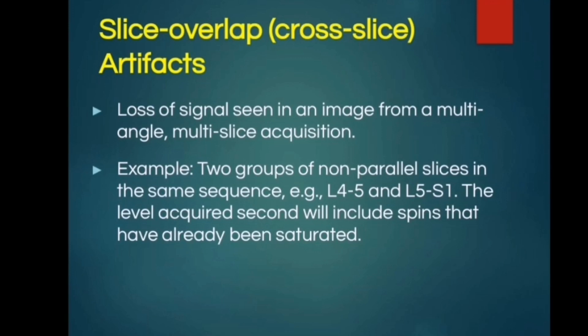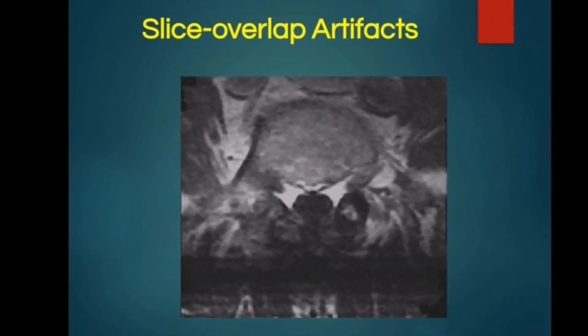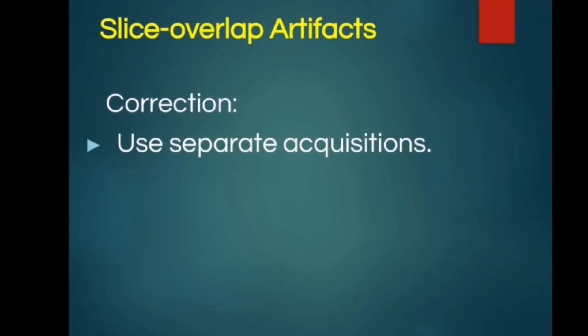Slice overlap or cross-slice artifact is due to loss of signals seen in an image from a multi-angle, multi-slice acquisition. An example is two groups of non-parallel slices in the same sequence, such as the L4-L5 and L5-S1 junction — the level acquired second will include spins that have already been saturated. Slice overlap artifacts can be corrected by the use of separate acquisitions.